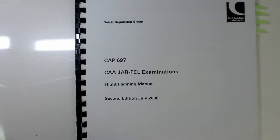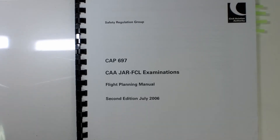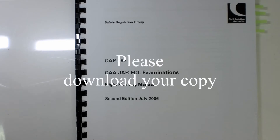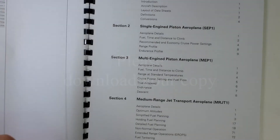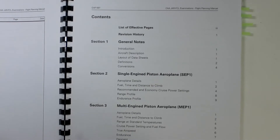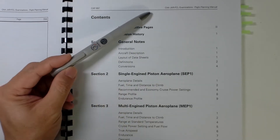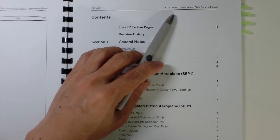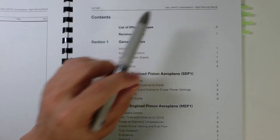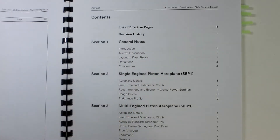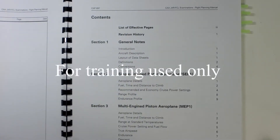This is the CAP 697, published by the UK CAA. It's available freely for your use — this is my copy. The CAP 697 we're using is actually published for the purpose of training. This document is to aviation standard; it is a training publication.